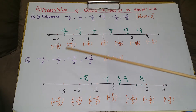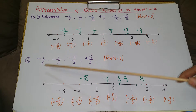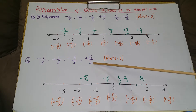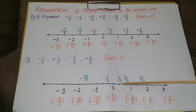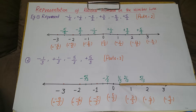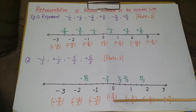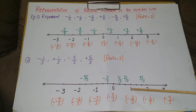Now see the next example. The rational numbers are -1/3, 1/3, -5/3, and 5/3. Here the denominator is 3, so we divide each segment into 3 parts. Draw the number line and divide each segment into 3 parts. I have divided 0 to 1 into 3 parts: 1, 2, 3.